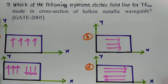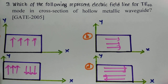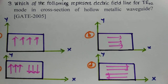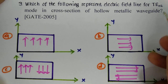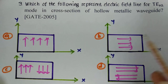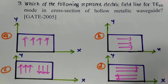The next question asks: which of the following represents the electric field lines for TE02 mode in the cross-section of a hollow metallic waveguide? This was asked in GATE 2005. I will explain the modes for rectangular waveguides to give a better understanding of the answer.